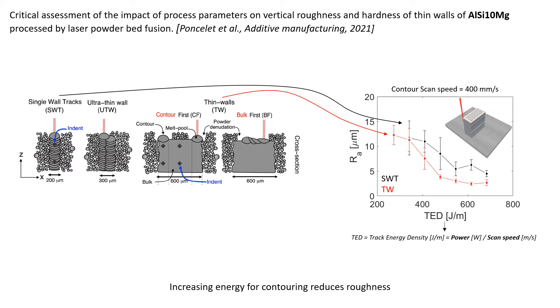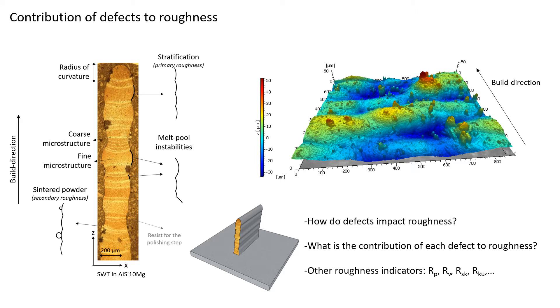Last time we met, I presented a paper in which we studied the impact of the main process parameters on vertical roughness. We used simple structures such as single wall tracks and thin walls. One of the main outcomes was that to reduce surface roughness, you better use a contour which is processed first and most of all use a very high energy track density for the contour, the TED which is the power divided by the scan speed of the laser. As you can see on this graph, it allows to reduce the roughness down to 2 microns. By simply using high energy density for the contours in aluminum silicon 10 magnesium, we can easily reduce the vertical roughness.